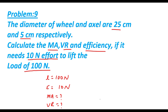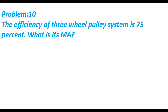In this way we can solve any type of numericals related to the wheel and axle. Let us look at the next problem, problem number 10. In this problem we have the efficiency of a three-wheel pulley system. In a pulley system, velocity ratio equals the number of pulleys used, which is 3, so VR becomes 3.